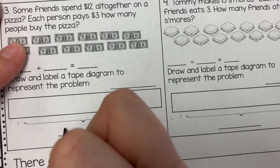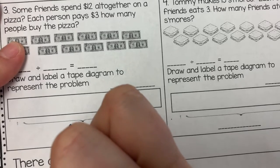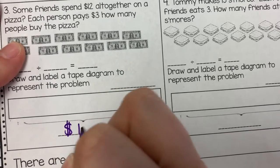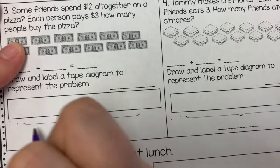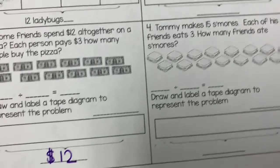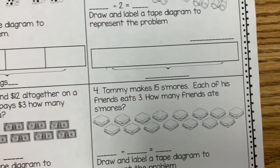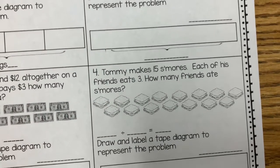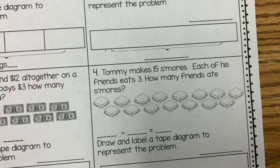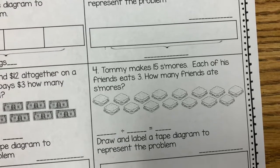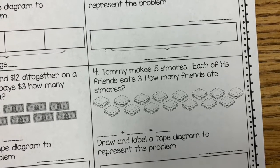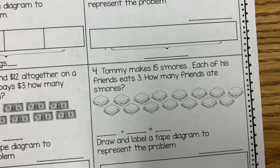So this was $12 — that's the whole total on the tape diagram. Number four: Tommy makes 15 s'mores. Each of his friends eats three. How many friends ate s'mores?